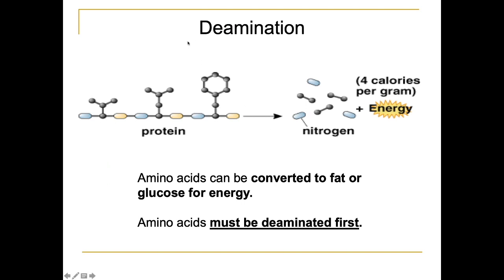Deamination is the process of turning a protein into energy. You take the amino acid, chop off the nitrogen group, and get four calories per gram, leaving carbon skeletons that can either be used to make fat or energy. If they aren't used, they get excreted in your urine along with the nitrogen.